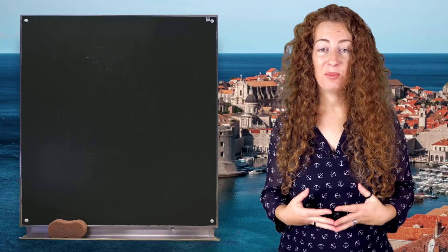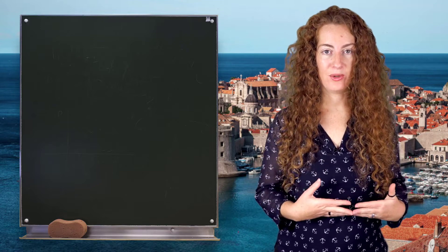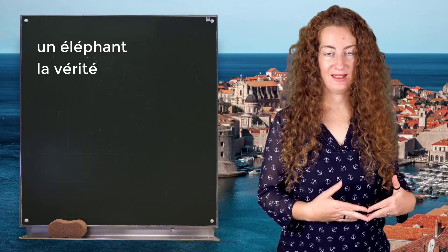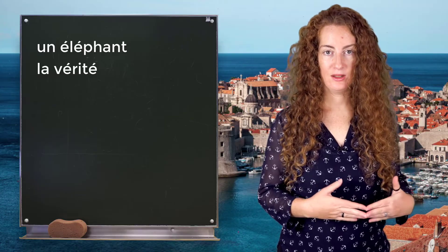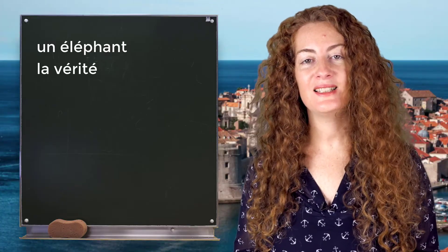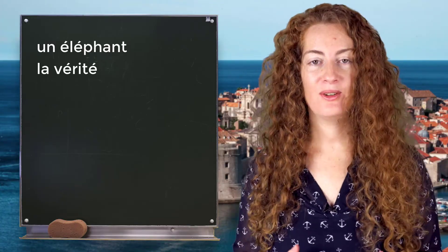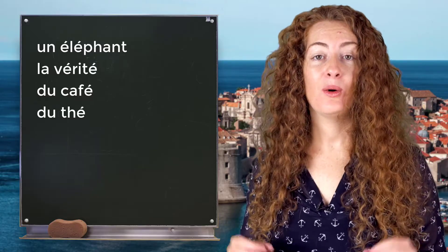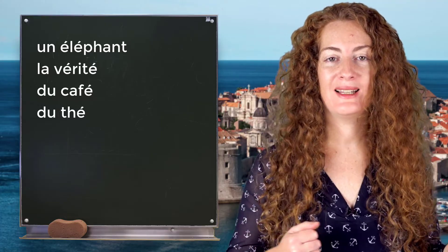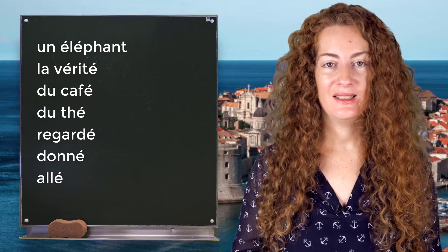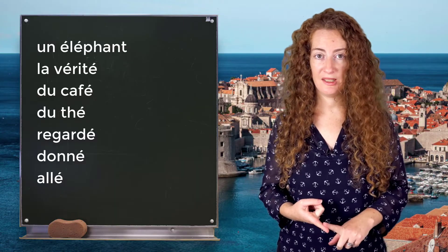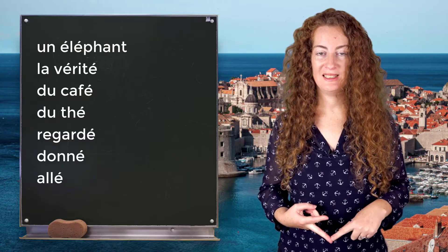Let's see some examples with the sound 'é'. We can find this accent a lot at the end of words. For example: du café, du thé, and in all the past participles of the first group — par exemple: regarder, donner, aller, okay? So I repeat: at the end of the word, when there is no accent, you don't pronounce anything. When there is an accent aigu, you pronounce it 'é'.